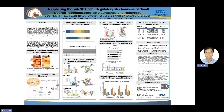Hi, my name is Sanat Mahiti, a third-year graduate student at the Department of Chemistry and Biochemistry. I am currently working on the project disciplining the SNARF for regulatory mechanism of small nucleo-ribonucleoprotein abundance and repertoire. We call small nucleo-ribonucleoprotein as SNARF. SNARF has a common structural feature composed of around 50 nucleotides in sequence that contains the SM site and SSM 3-prime stem loop, called the SNARF code.